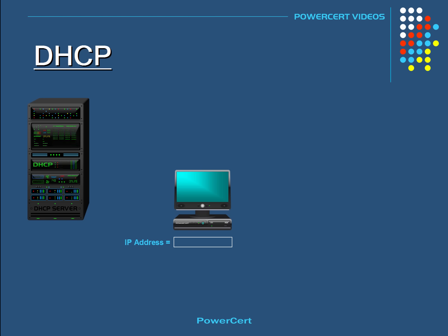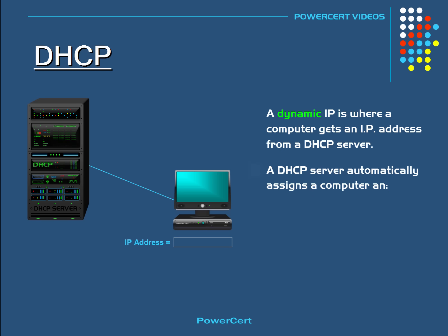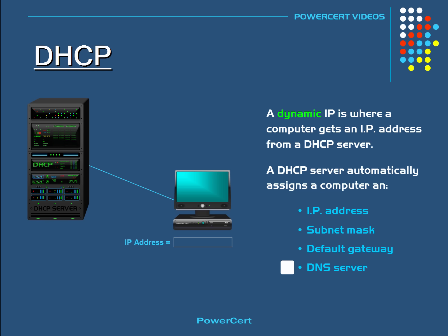But there is a better and easier way to assign a computer an IP address, and this is called a dynamic IP. A dynamic IP is where a computer gets an IP address automatically from a DHCP server. A DHCP server automatically assigns a computer with an IP address, and in addition to an IP address, it can also assign a subnet mask, default gateway, and a DNS server.